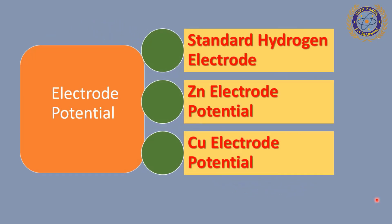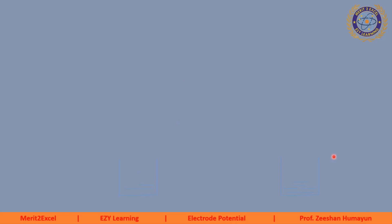Bismillahirrahmanirrahim, Assalamualaikum everyone, welcome to another video lecture for the students of first year class. Today I am going to explain another very important topic of chapter number 7 of first year Karachi Board chemistry syllabus. The topic name is electrode potential. In this lecture I will explain the definition of electrode potential, important features, and we will discuss standard hydrogen electrode potential, zinc electrode potential, and copper electrode potential. This is a very important topic for the examination.